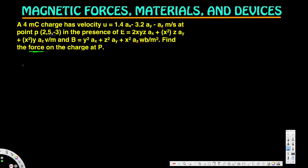The equation for the force is F equals q times (v cross B plus E). Here q is the given charge of 4 millicoulombs, v is the velocity, B is the magnetic field, and E is the electric field. We need to find v cross B first, then add E, and multiply by q.